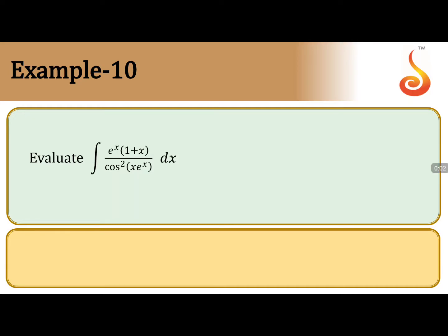Evaluate the integral: e to the power x times (1 plus x) divided by cos squared of x e to the power x. This is a very important question. We are going to take x e to the power x as substitution.